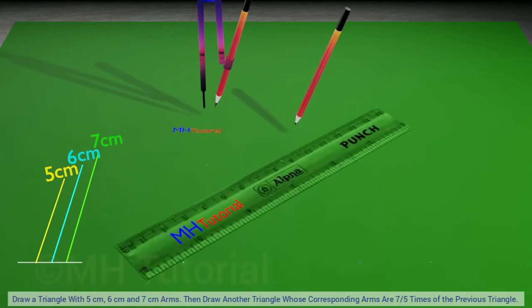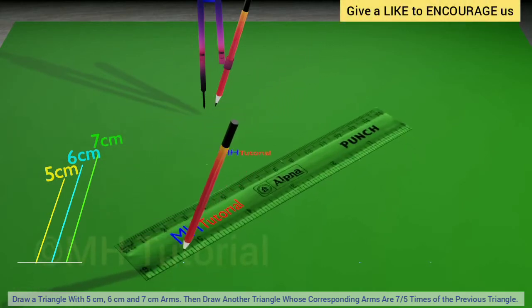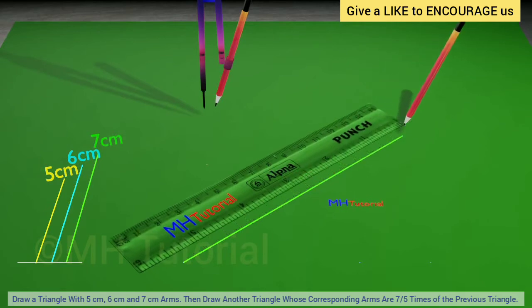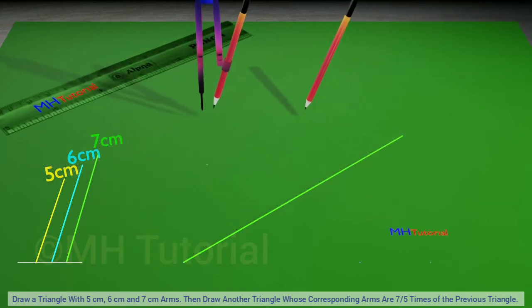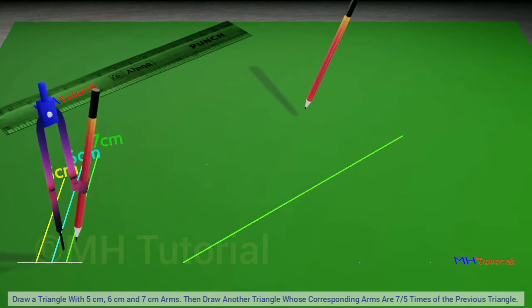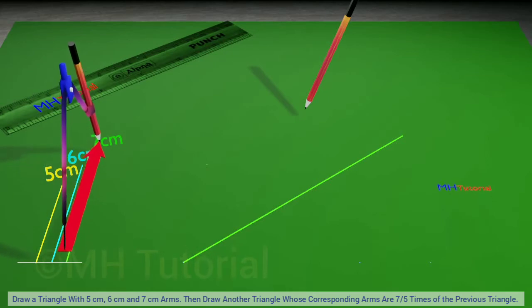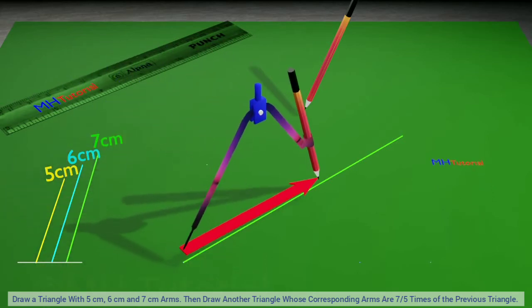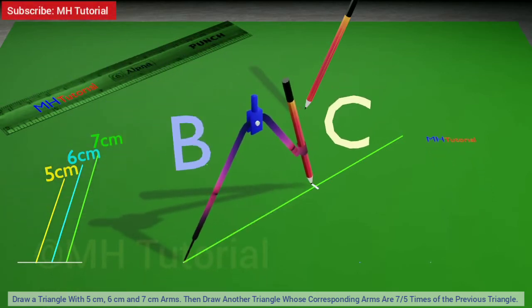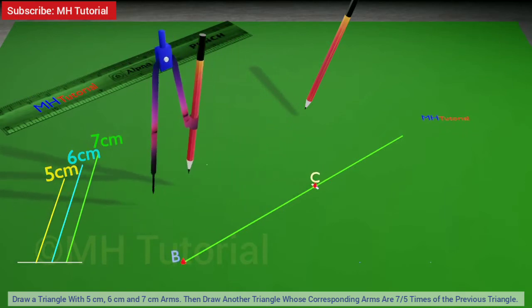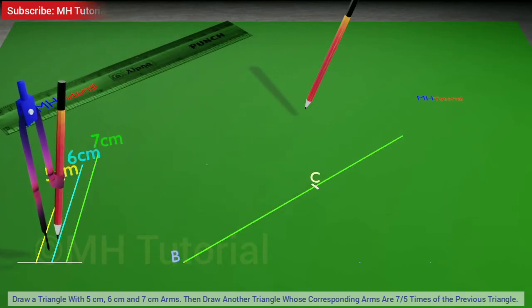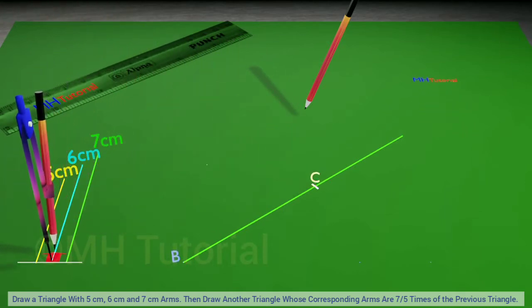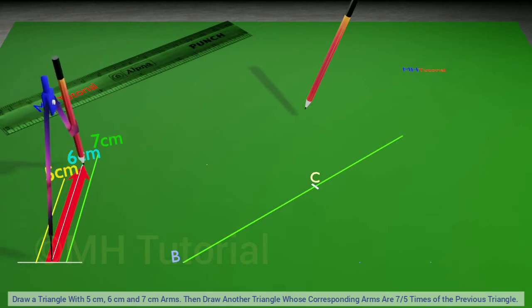Now with the scale and pencil, a large line segment of random length is drawn on the middle of the page. A compass has been taken, the length of 7 centimeters is copied with the compass, and the size was deducted from that large line segment. Its two endpoints are named B and C. Then a circle arc of radius 6 centimeters is drawn from point B.